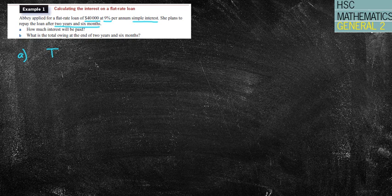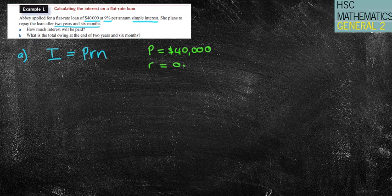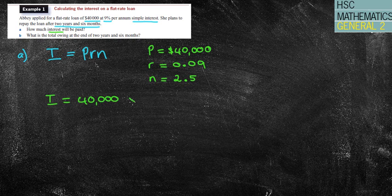The first question says, how much interest will be paid? Well, straight away, I see that simple interest and I'm writing down I equals PRN. If you would like to write down things like P equals 40,000, you might like to write down that R equals 0.09. It's per annum and we know it's per year for the number of payments. And we know that our N equals two and six months. So 2.5 because six months is half of a year. Now, if you write that information out there, that's quite useful because when I'm asked to find out how much interest we're paying, we're doing I equals my 40,000 times my 0.09 times my 2.5.